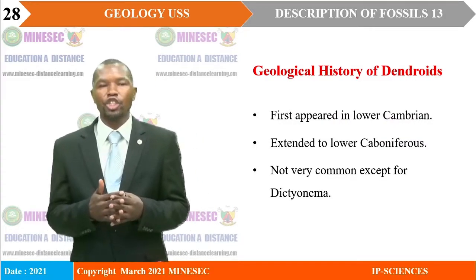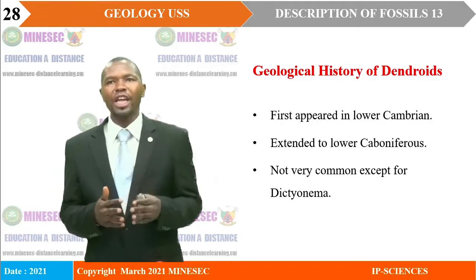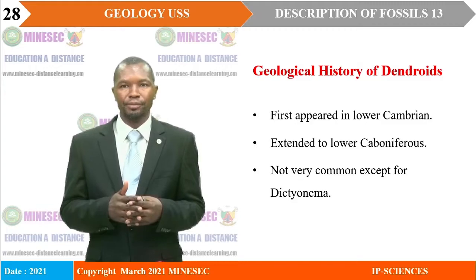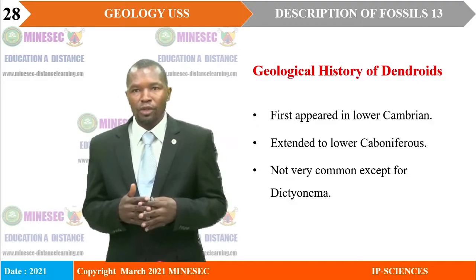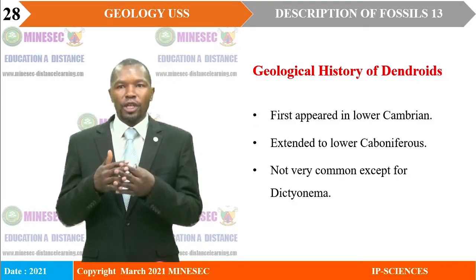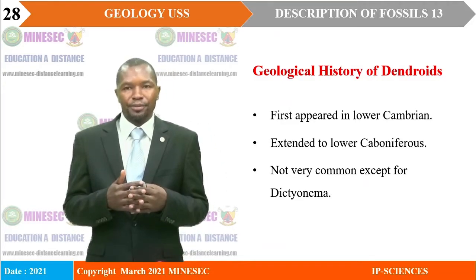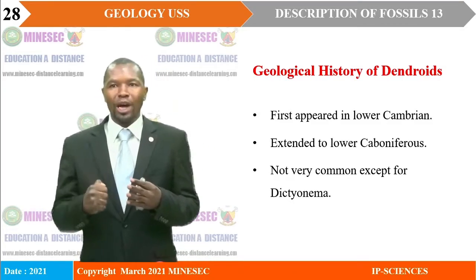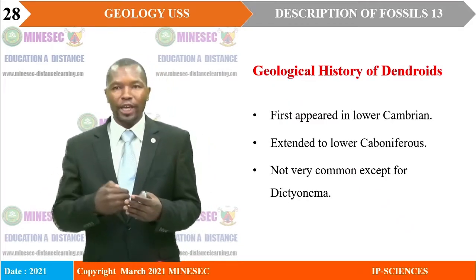The geological history of dendroids: dendroids first appeared in the lower Cambrian and extended to the lower Carboniferous. Not very common forms — except Dithonema survived. As they extended to the lower Carboniferous, a good number of them went into extinction.